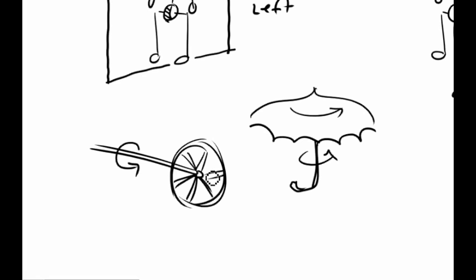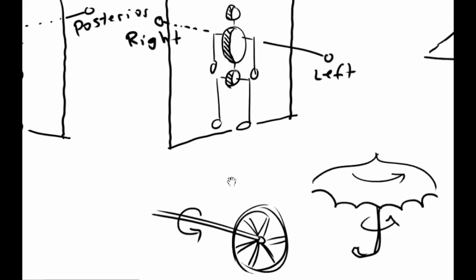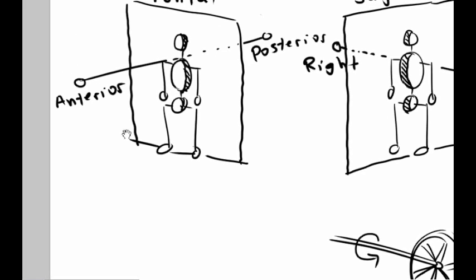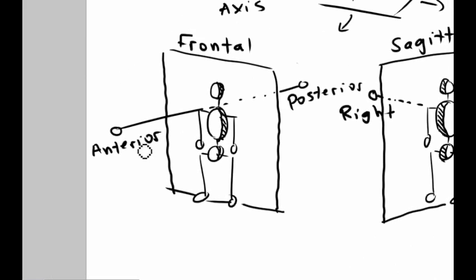Now, given a movement, how can we decide what plane it occurs in? We'll take some examples with the figures we've already drawn. So, a movement like abduction, which is a movement of a body part away from the midline, would occur typically in the frontal plane. We can picture this hand being brought up to the right side of the person. That's abduction.